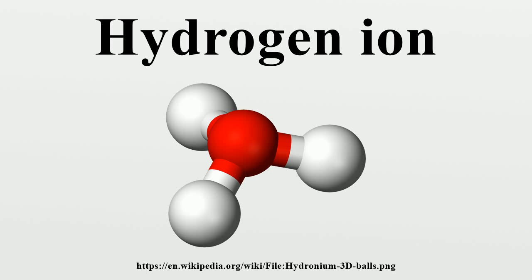A hydrogen atom contains a single proton and a single electron. Removal of the electron gives a cation, whereas addition of an electron gives an anion. The hydrogen anion, with its loosely held two-electron cloud, has a larger radius than the neutral atom, which in turn is much larger than the bare proton of the cation.